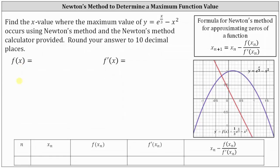Let's first write y as y equals e to the power of 1/3 x minus x squared. Because we're looking for the critical number where y has a maximum value, we will use y prime for f of x in the Newton's method formula. The derivative of y is equal to e to the power of 1/3 x times 1/3 minus 2x, or 1/3 e to the power of 1/3 x minus 2x.